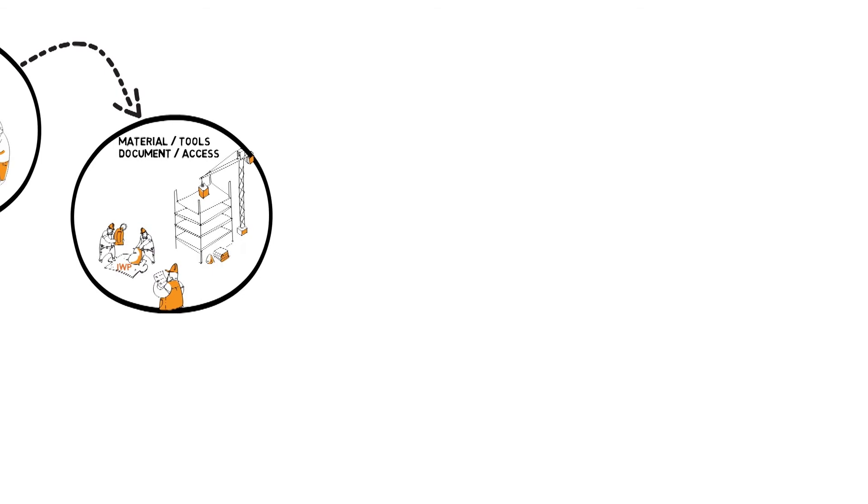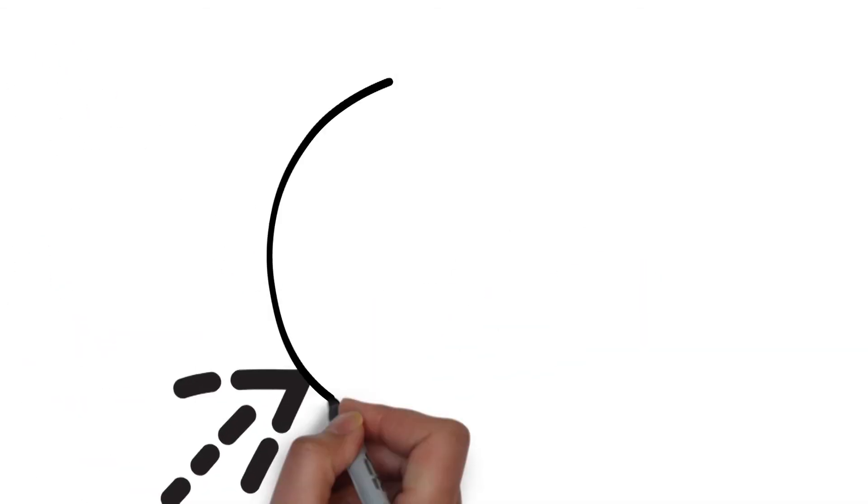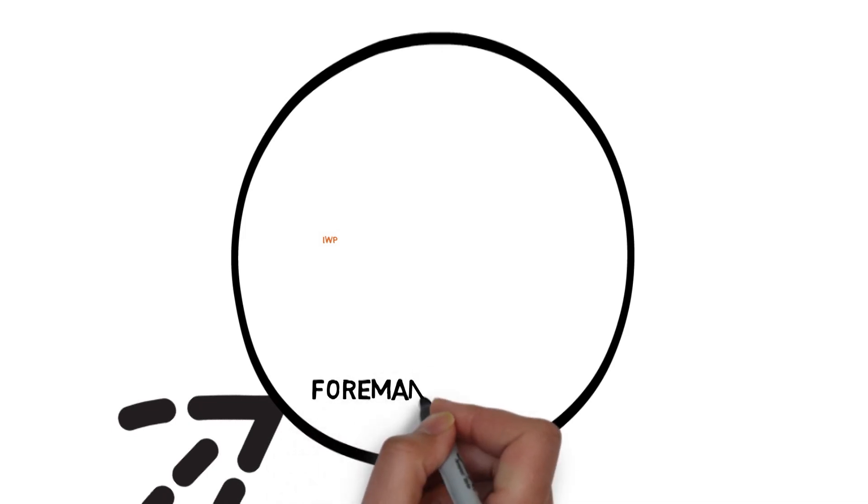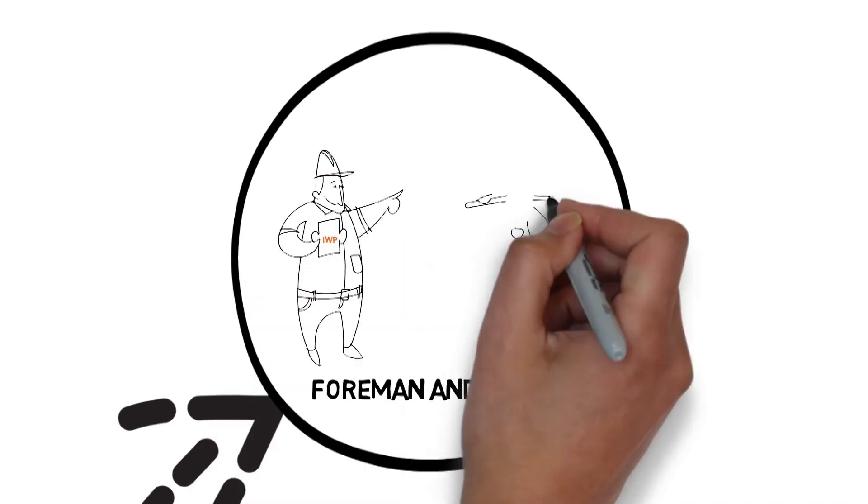Then finally, after all this preparation, we reach the objective. The IWP is issued to the foreman a couple of days before it is due to start, so that they can prepare to execute the work.